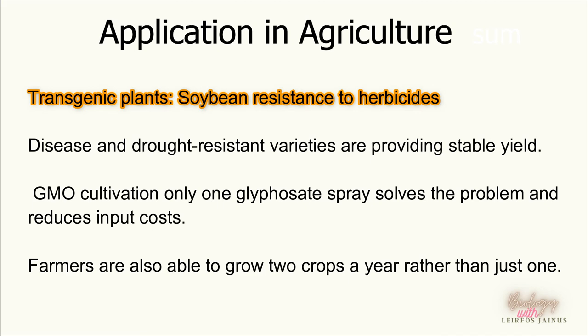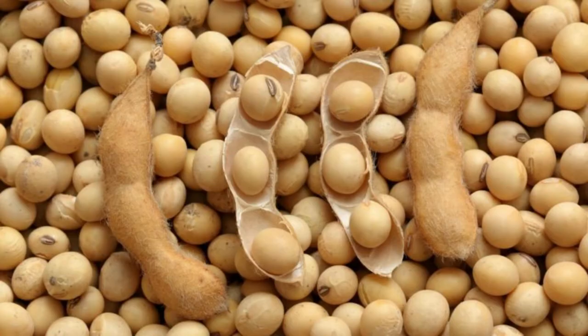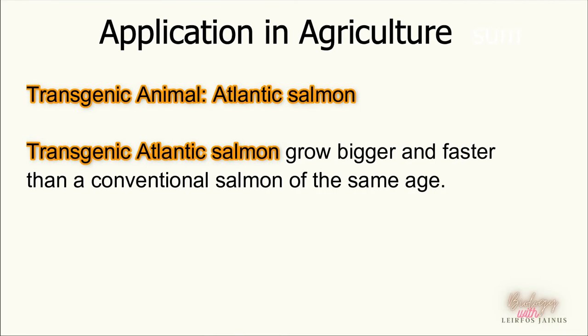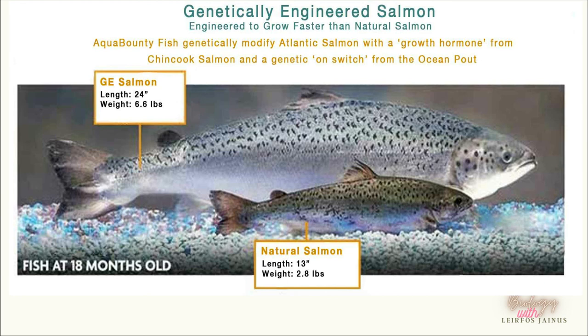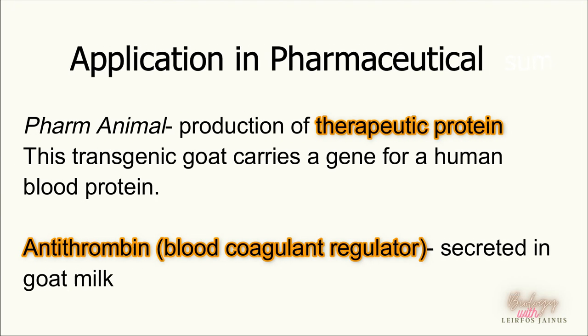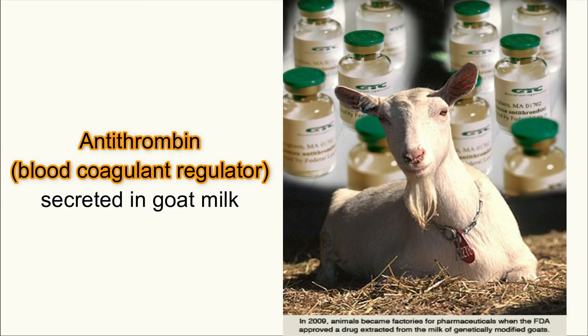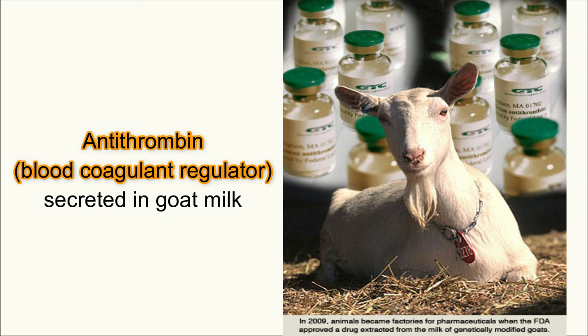Another application of recombinant DNA is in agriculture, for example to produce transgenic soybeans that are resistant to herbicide. Soybean is the second largest crop grown in the United States. Another application is the transgenic Atlantic salmon, which can grow bigger and faster compared to natural salmon. In pharmaceuticals, besides the mass production of insulin, recombinant DNA technology is also used to produce therapeutic proteins such as antithrombin in goat milk.